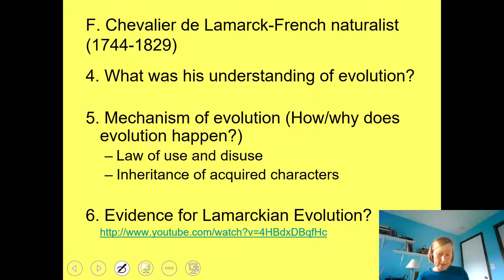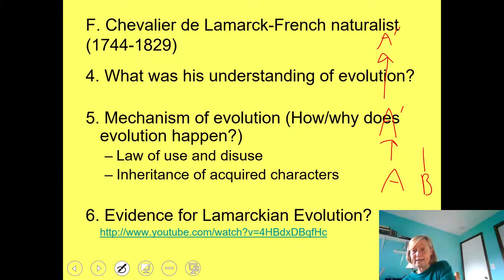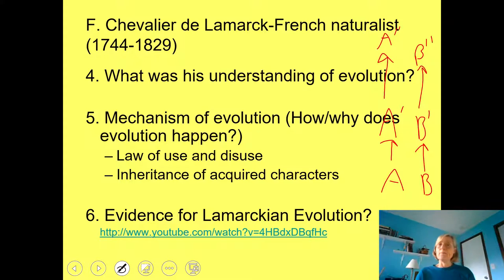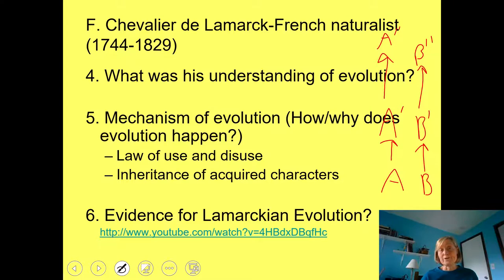Organisms are going to adapt to a changing environment, but only within lineages. For example, species A might change to species A prime, and over time to A prime prime. A separate lineage B undergoes its own evolutionary change. His understanding of evolution is remarkably similar to Darwin's in that adaptive change happens over time. The mechanism he came up with was the inheritance of acquired characters and the law of use and disuse.